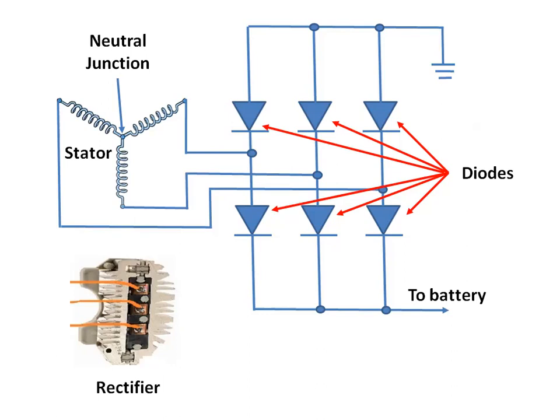Generally, there are six diodes used to rectify current in an alternator. Three are put in forward bias to allow current to pass when the polarity is positive. Three diodes are put in reverse bias so that when the alternating current switches polarities, they do not allow the charge to change direction, effectively converting AC to DC by restricting current flow to one direction only.